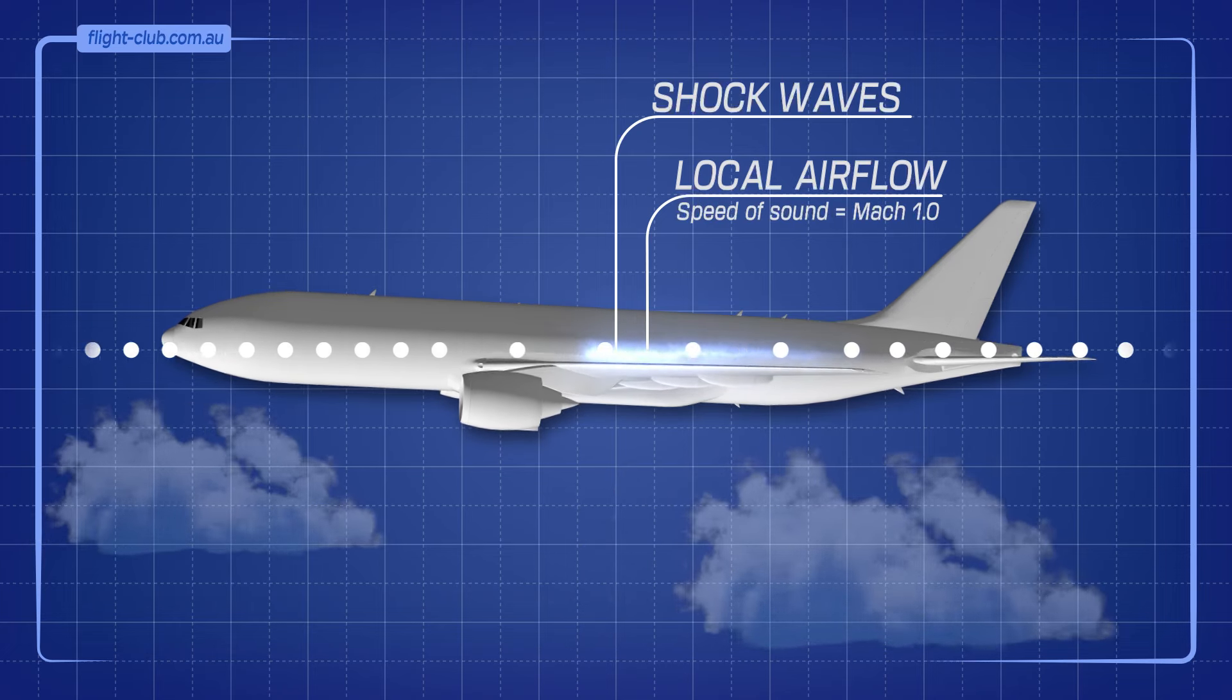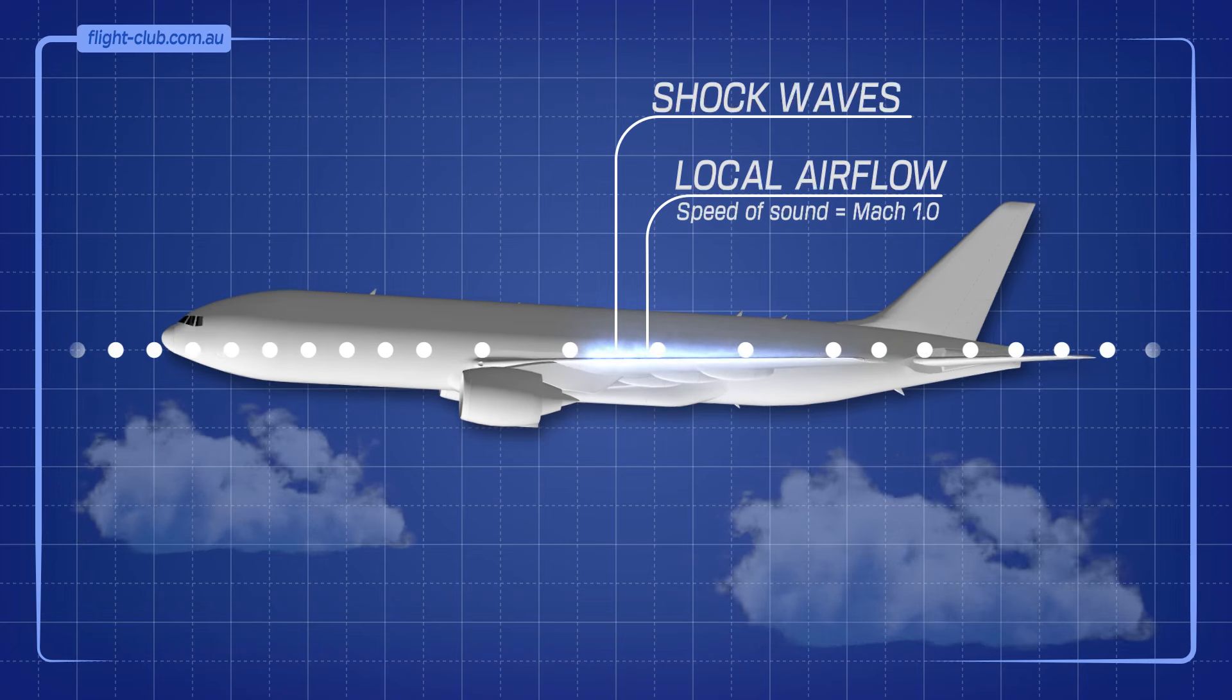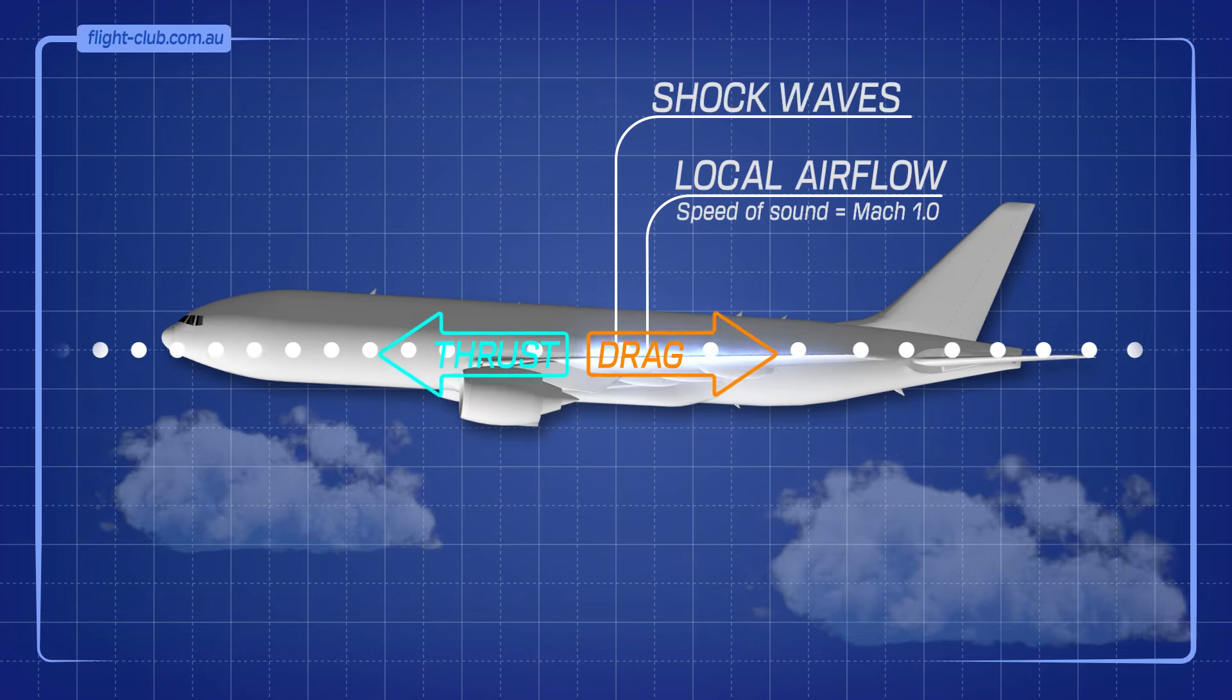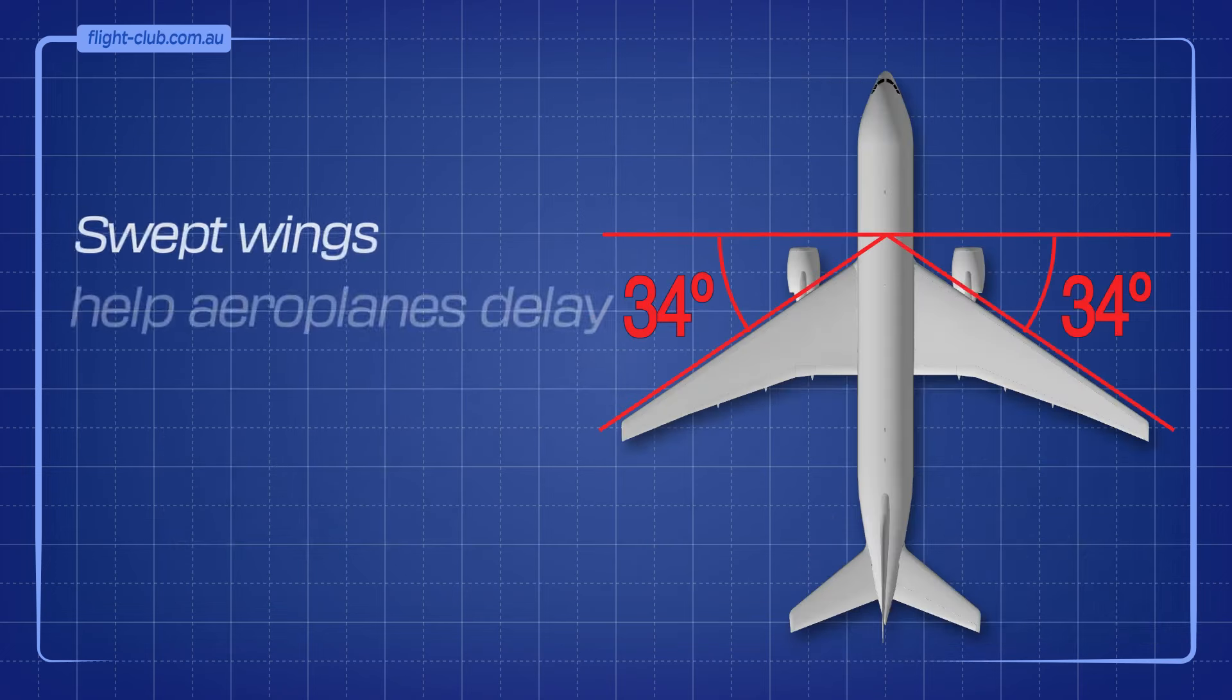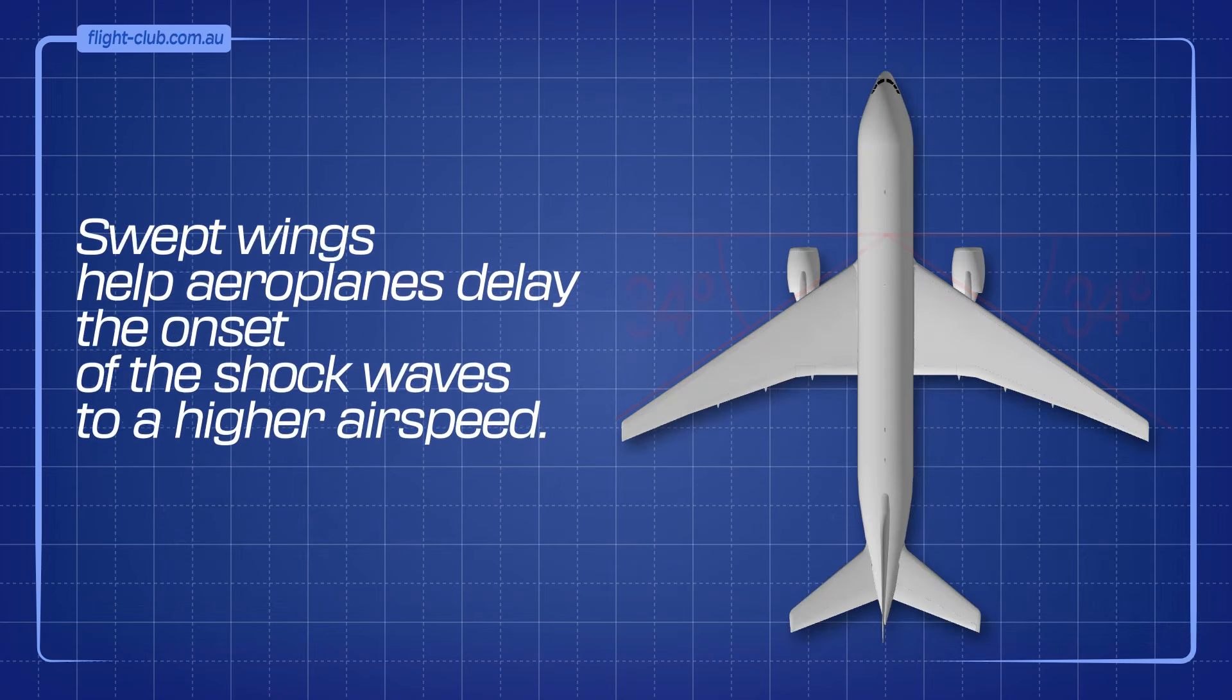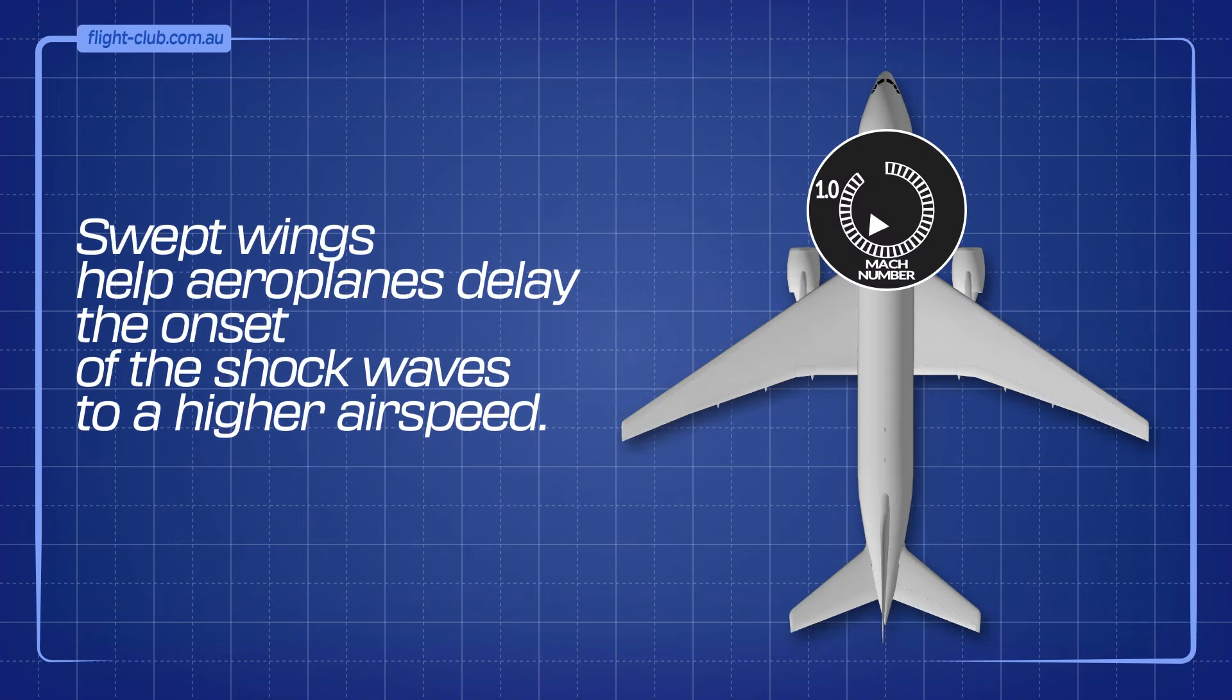The formation of these shock waves causes energy loss for the aeroplane, which requires additional thrust to compensate for the increased drag. Swept wings help aeroplanes delay the onset of the shock waves to a higher airspeed, and this is how it works.